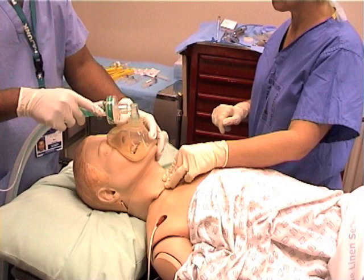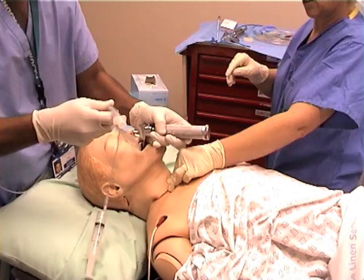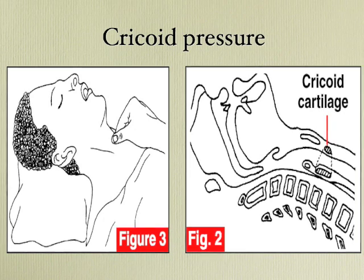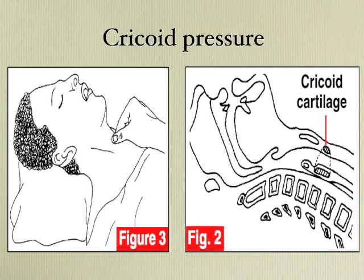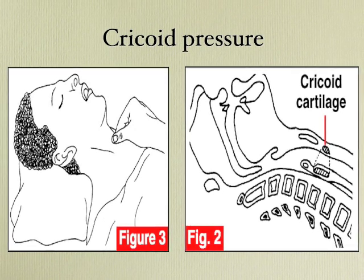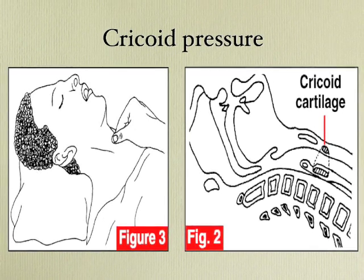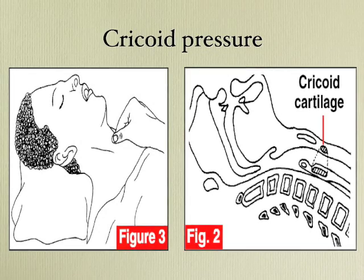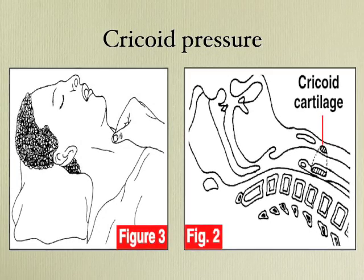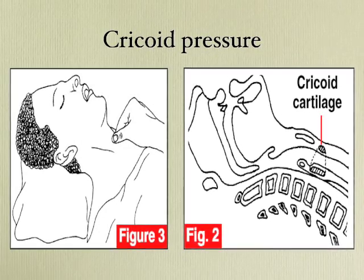Rapid Sequence Induction aims to achieve rapid induction and intubation without actually ventilating the lungs or stomach, thereby reducing the risk of aspiration. The application of cricoid pressure as a part of rapid sequence induction is to minimize aspiration by occluding the esophagus against the cervical vertebrae.